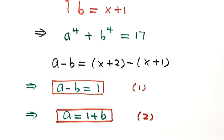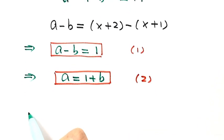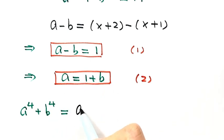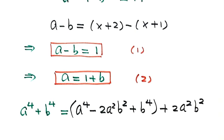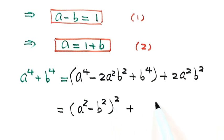Now let's work on the left-hand side of a⁴ + b⁴. The idea is to lower the power from 4th degree. We write: a⁴ - 2a²b² + b⁴, and then outside we need to add back 2a²b². These first three terms form a complete square: (a² - b²)², plus the last term 2a²b².